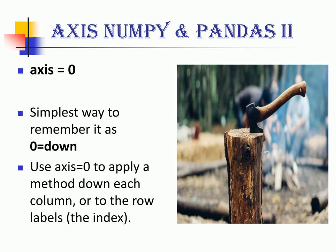Let's start with axis equal to zero. A simple way to remember this is to equate zero with down. Think of it as chopping a log using an axe into two vertical pieces. Each row element of the column is transformed using a function when you apply axis equal to zero.